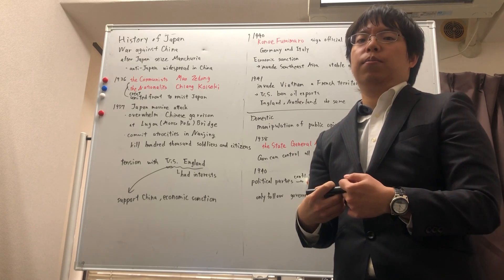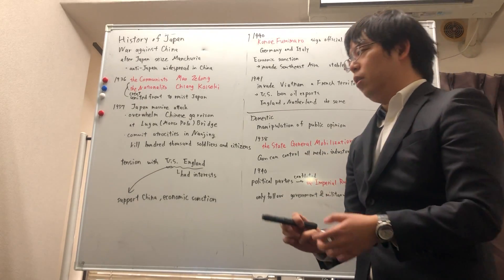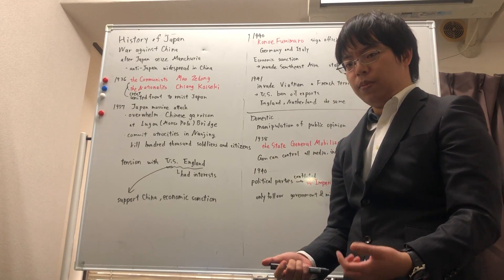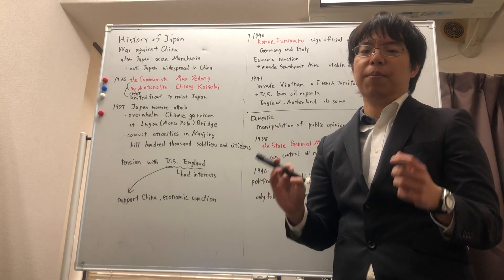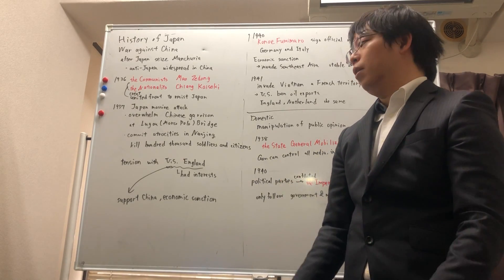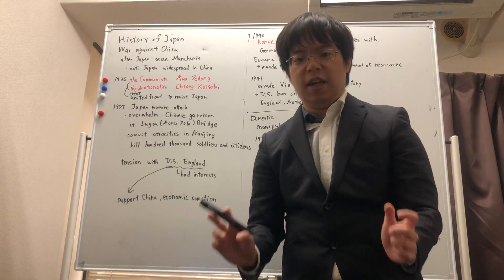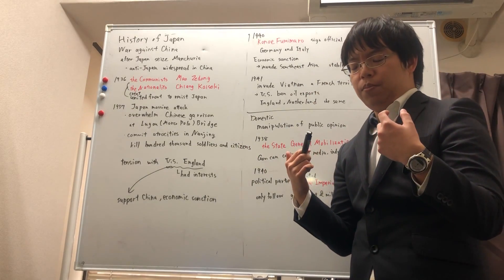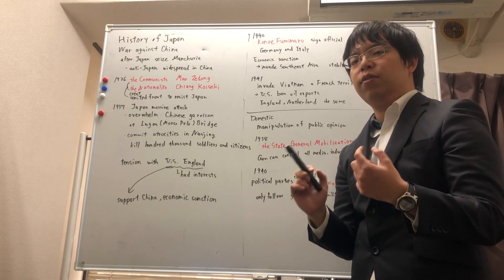Thanks to that, the tension between Japan and the US and England increased. At the time, those nations had great interests in China. So the US and England supported China and launched economic sanctions against Japan.